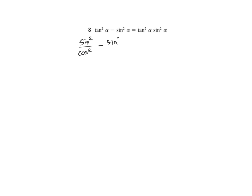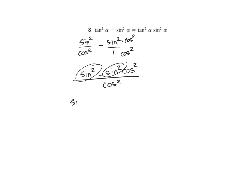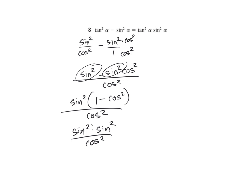Number 8. Both sides are fairly complex. I'm going to start with the left: sine squared over cosine squared minus sine squared over 1. Get a common denominator, multiply by cosine squared top and bottom. I get sine squared minus sine squared cosine squared over cosine squared. Factor out a sine squared, giving 1 minus cosine squared over cosine squared. 1 minus cosine squared is sine squared, so I have sine squared times sine squared over cosine squared, which is tangent squared times sine squared.